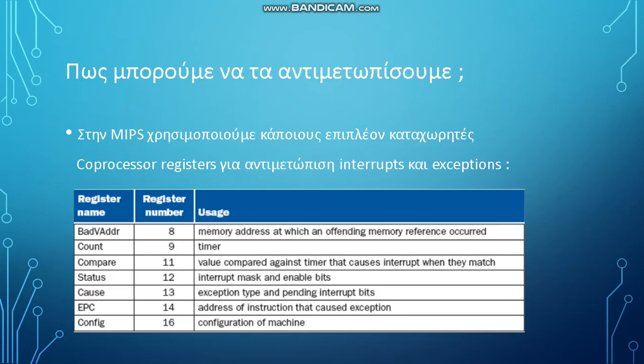How do we deal with them? In MIPS we use some extra registers, which are called co-processor registers, to handle interrupts and exceptions. An example of these registers is register number nine, which is used for timer interrupts.